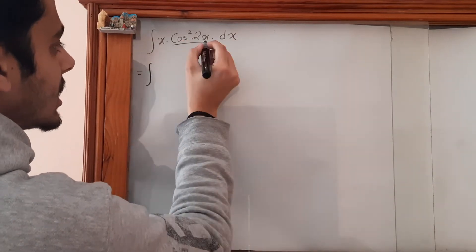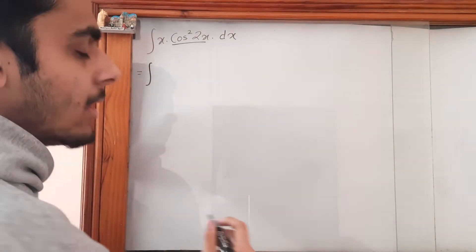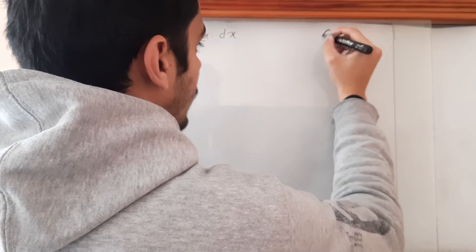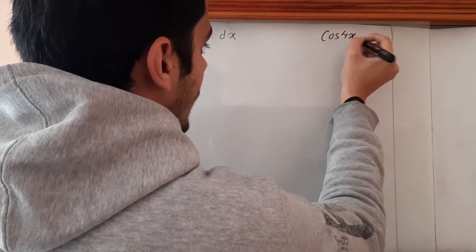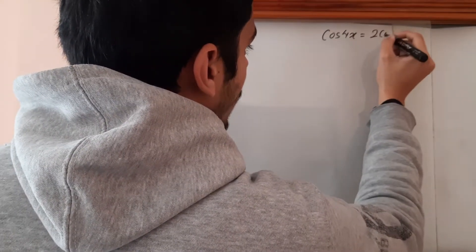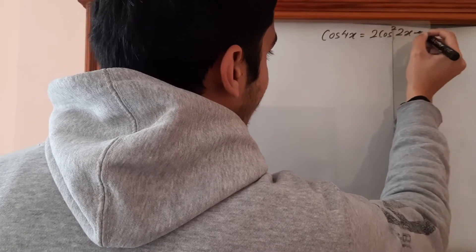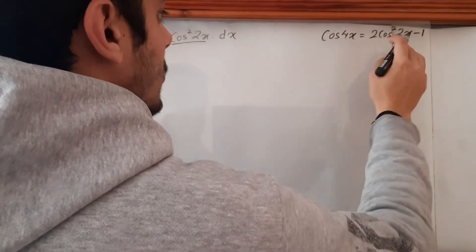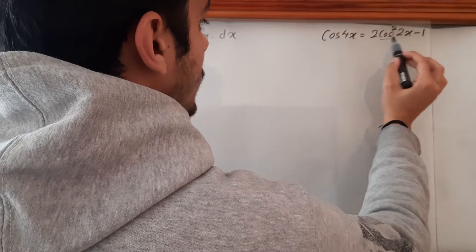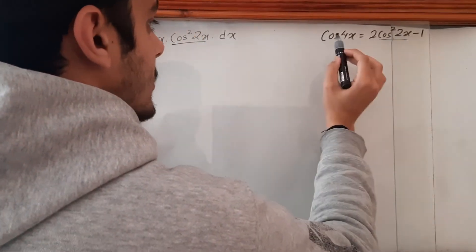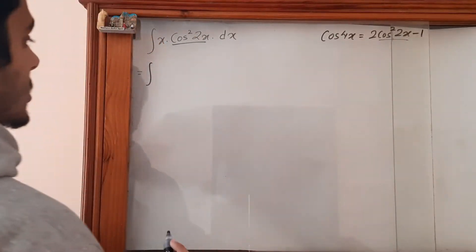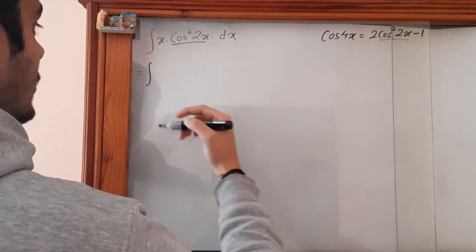Let's change this in terms of cos(4x). We know the formula cos(4x) = 2cos²(2x) - 1, so we are going to substitute the value of cos²(2x) from this trigonometric relation.